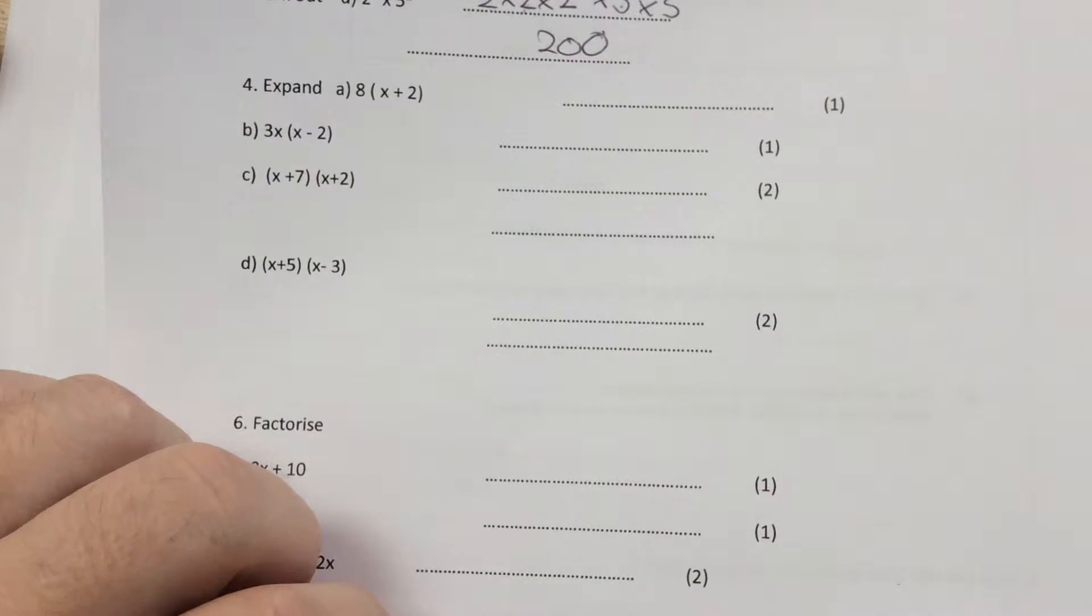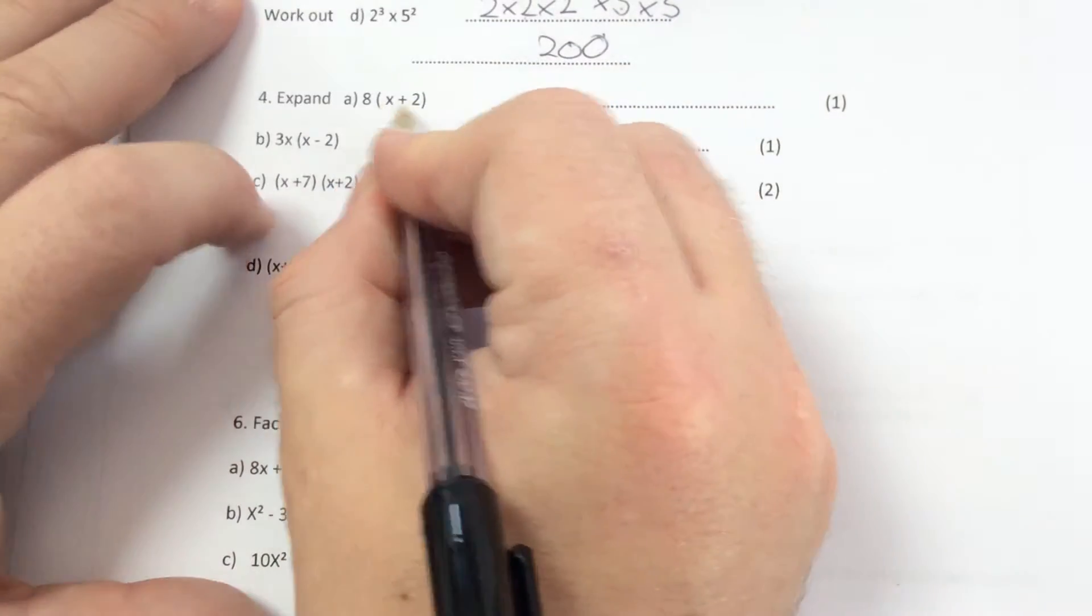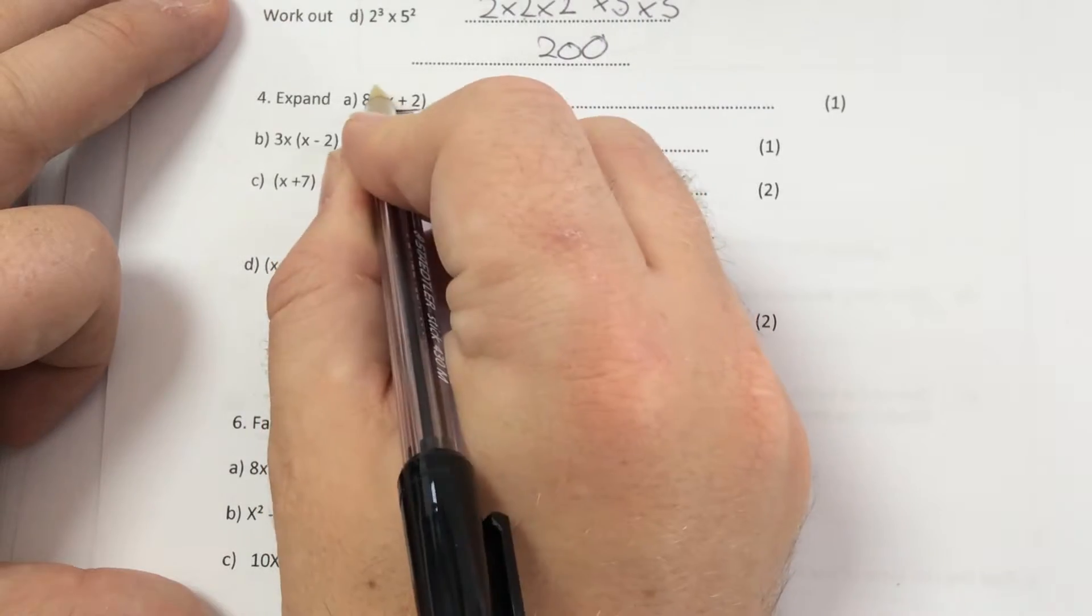Question 4, when you expand the bracket, you multiply everything inside the bracket by whatever's outside.